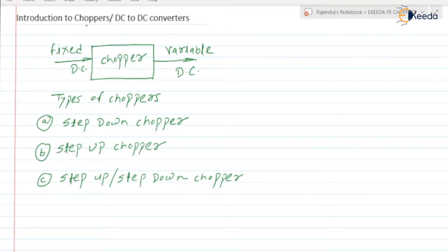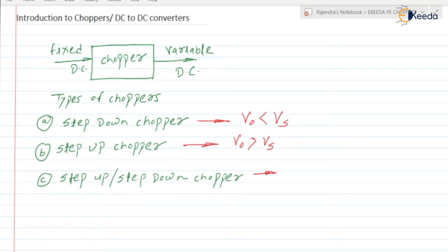In the step-down chopper, the output voltage is always less than the input voltage. In the step-up chopper, the output voltage is greater than the input voltage. And in the step-up/step-down chopper, a single circuit can be used as either a step-up or step-down chopper depending on the duty cycle.